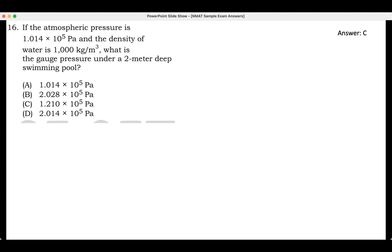Number 16. If the atmospheric pressure is 1.014 × 10^5 pascals and the density of water is 1,000 kg/m³, what is the gauge pressure under a 2-meter deep swimming pool?